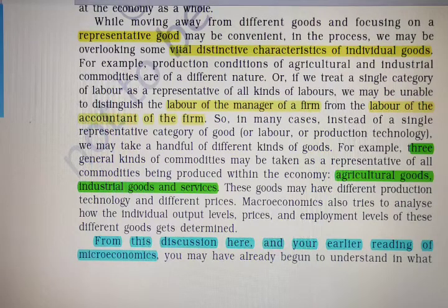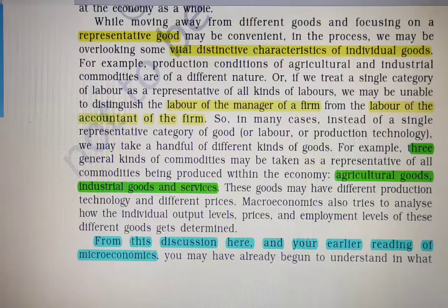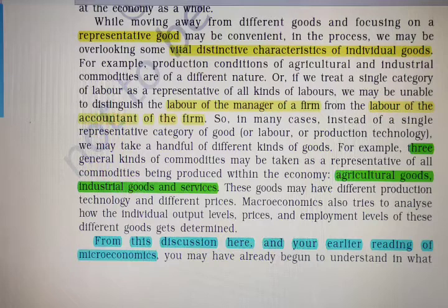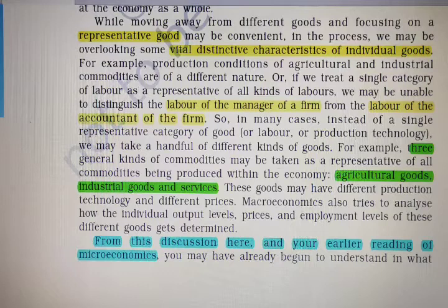In many cases, instead of a single representative category of good, labor, or production technology, we may take a handful of different kinds of goods. In macroeconomics, we take a handful of commodities as representative of all commodities produced within the economy. These are: agricultural goods, industrial goods, and services. All commodities related to agriculture are clubbed in agricultural goods; all manufactured goods fall under industrial goods; and banking, transport, and similar activities are clubbed under services.